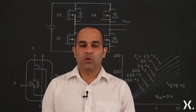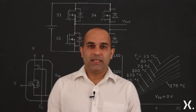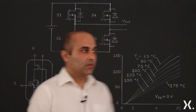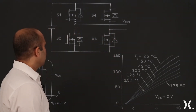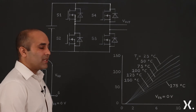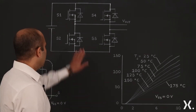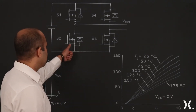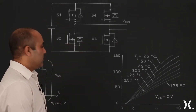As we all know, one of the fundamental building blocks of a power system is a FET. As we can see from this figure, there is a diode which is placed in parallel to a FET.